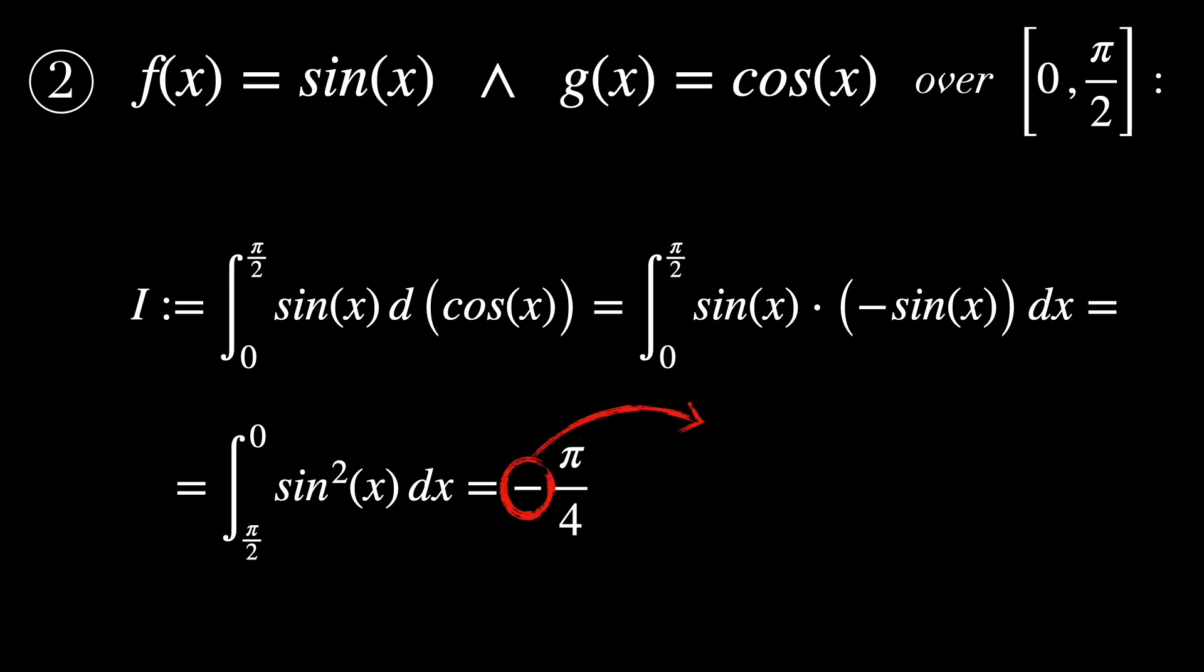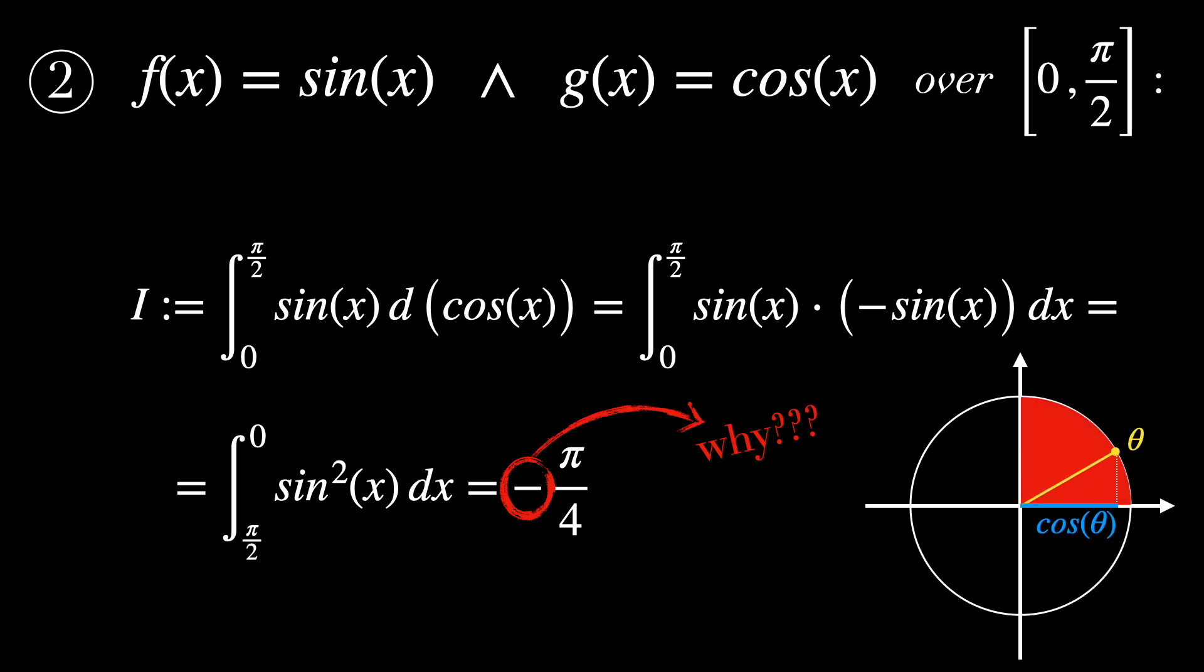But wait a second, how come the integral is negative? How can the area of the shadow cast by this part of the surface be negative? The minus sign comes from the direction in which the surface or fence in our previous analogy is being projected to the fg plane, and it is directly related to whether the function g of x is increasing or decreasing. In this case, g of x equals cosine of x, which is decreasing in the first quadrant, which is our interval of integration, [0, π/2].